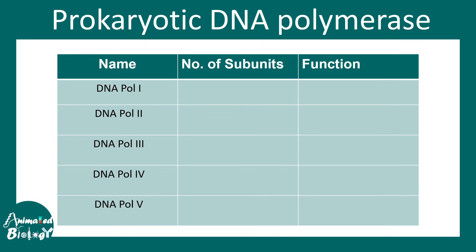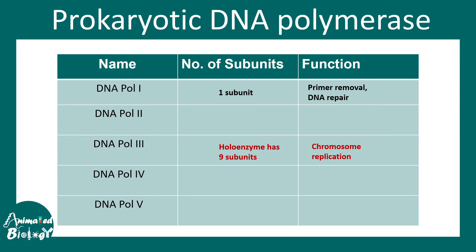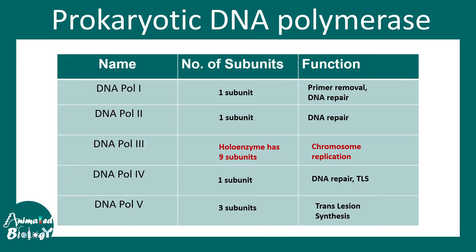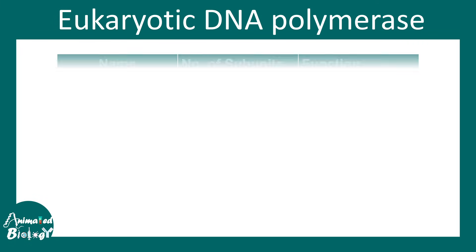Regarding prokaryotic DNA polymerases: the principal DNA polymerase is DNA Pol III, involved in chromosome replication. DNA Pol I is generally used for primer removal and DNA repair. DNA Pol II and Pol IV are both involved in DNA repair, while Pol V is involved in translesion DNA synthesis, which is an SOS repair process.